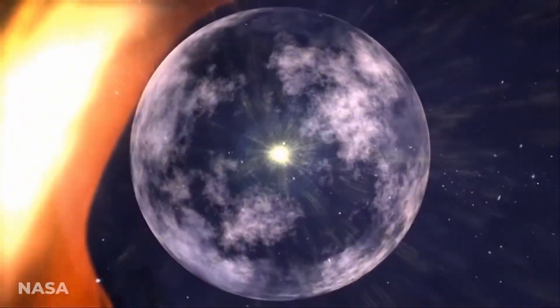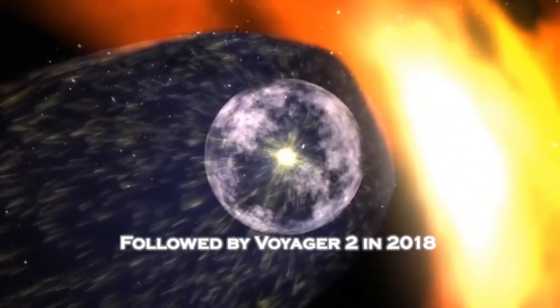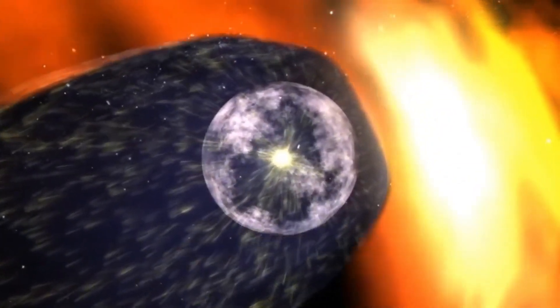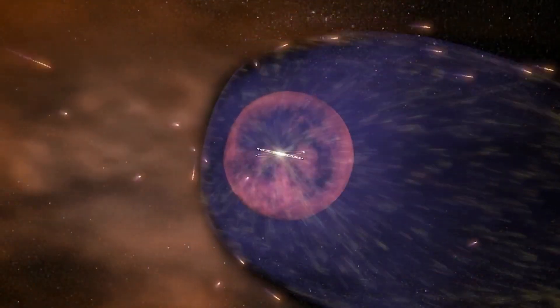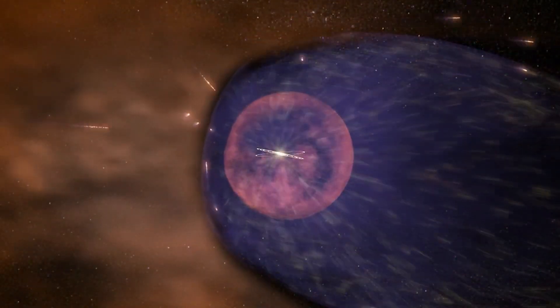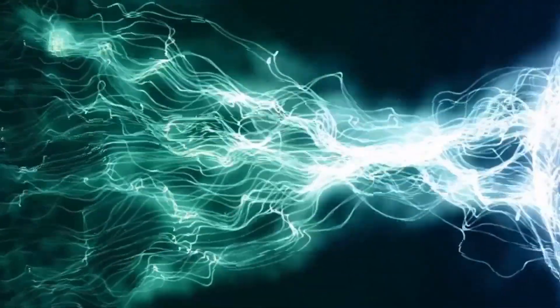The spacecraft also measured the planet's frigid temperatures, a bone-chilling minus 353 degrees Fahrenheit, minus 213 degrees Celsius, and traversed a plasmoid, unveiling intricate details of Uranus's magnetic field.